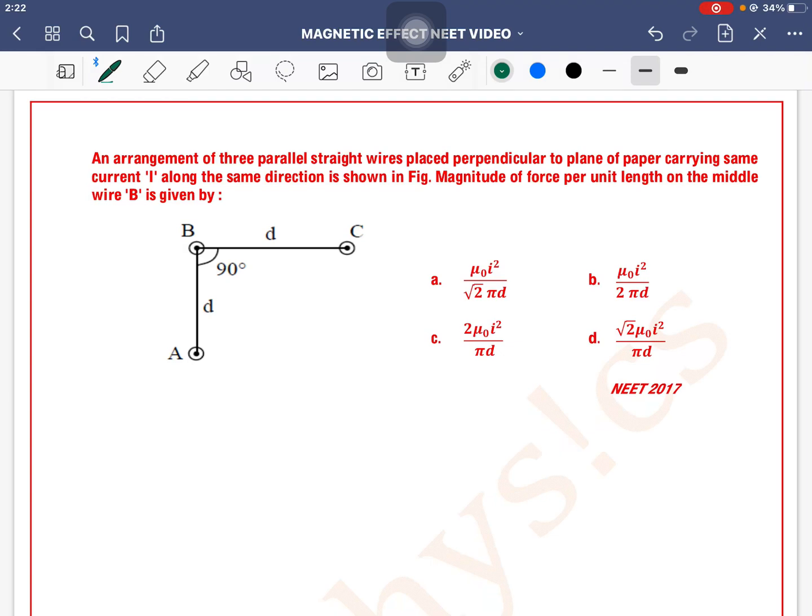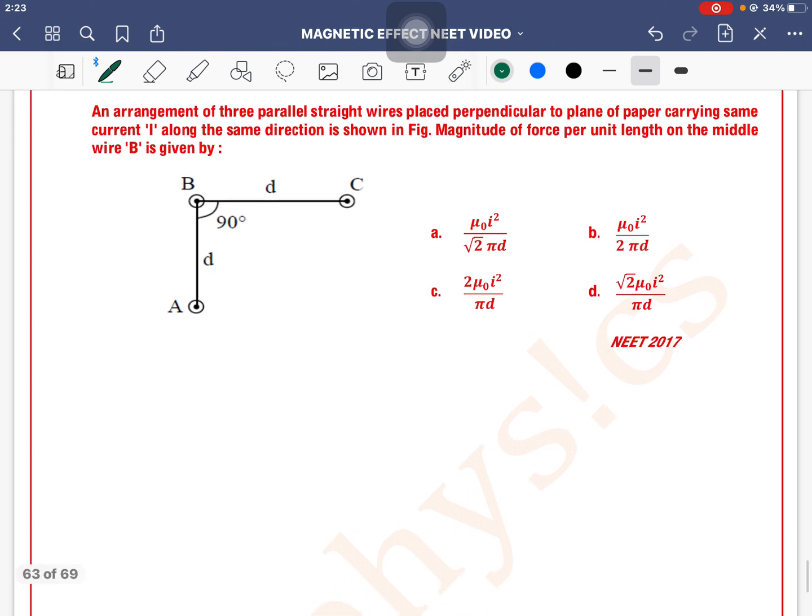An arrangement of three parallel straight wires placed perpendicular to plane of paper carrying same current I along the same direction is shown in figure. Magnitude of force per unit length on the middle wire B is given by: